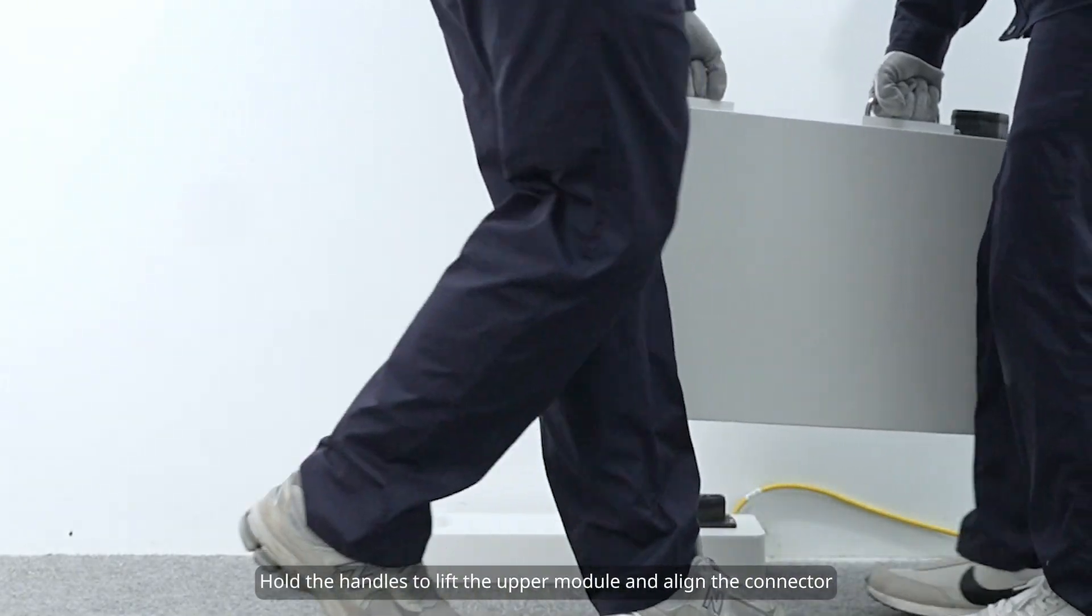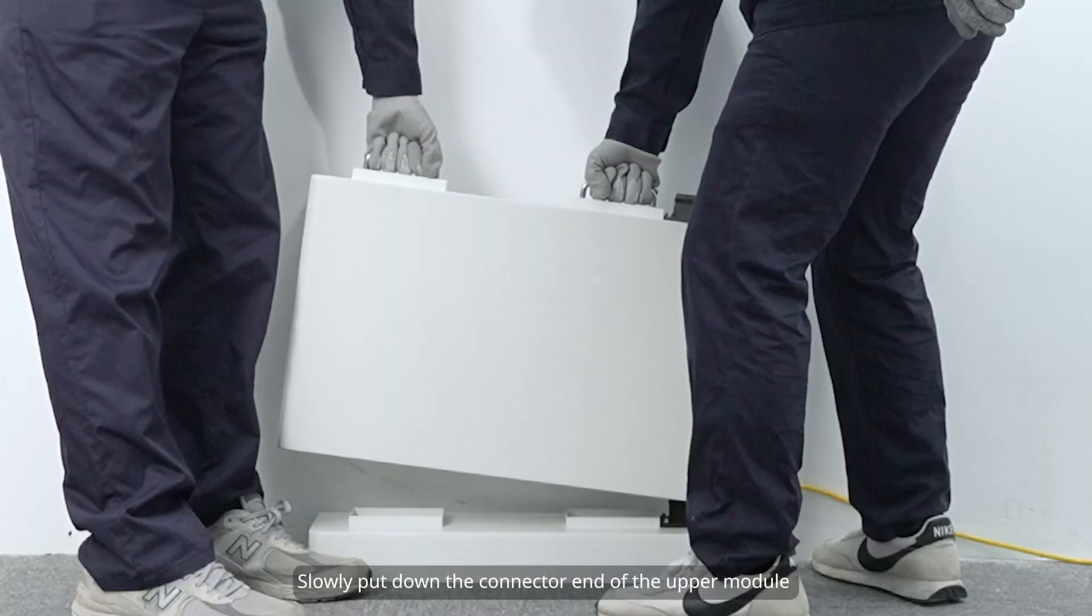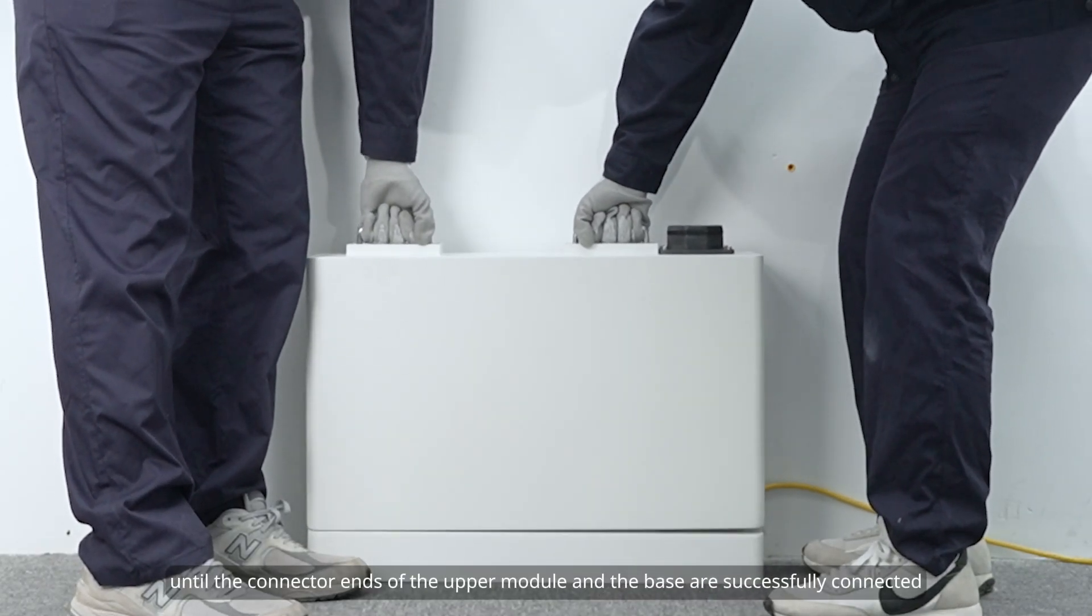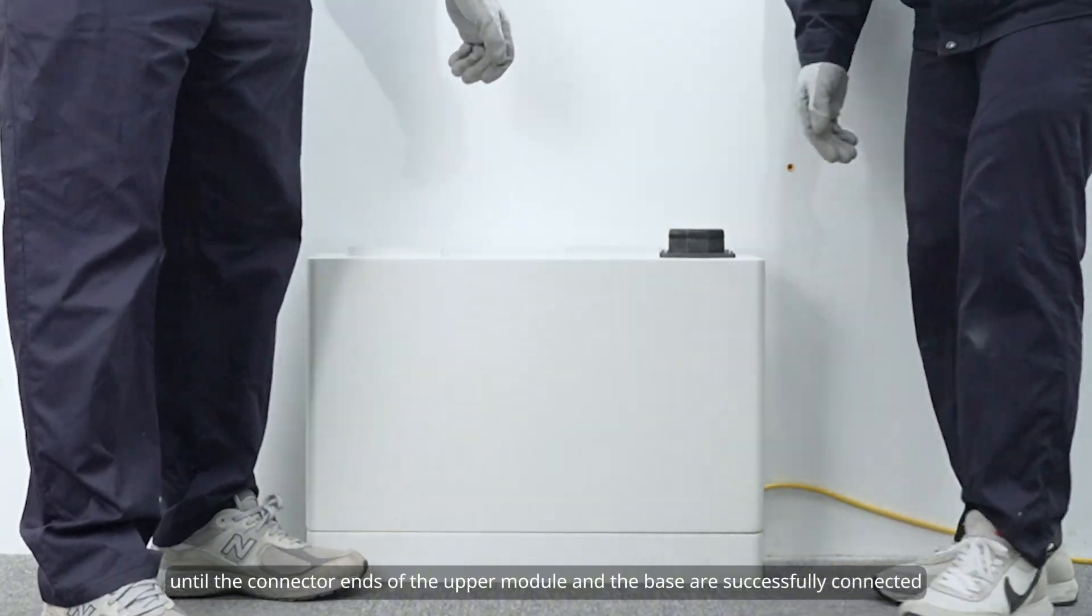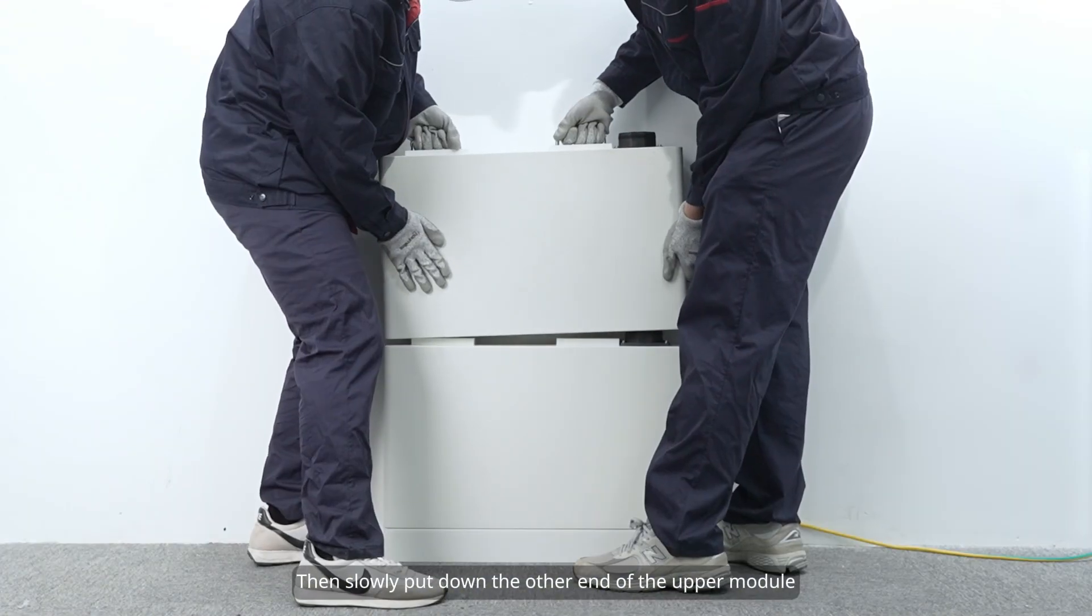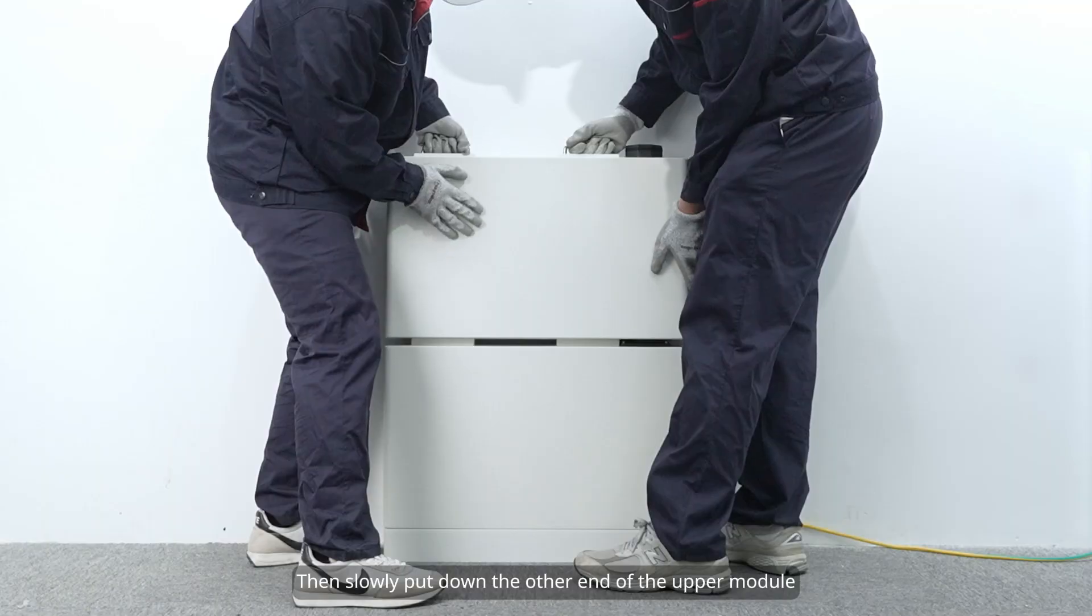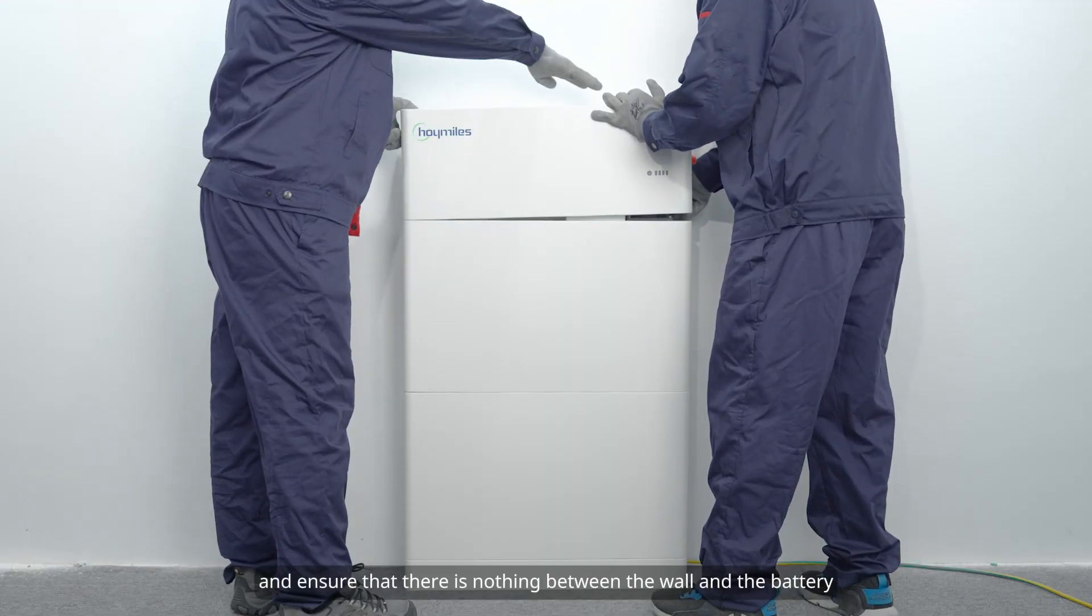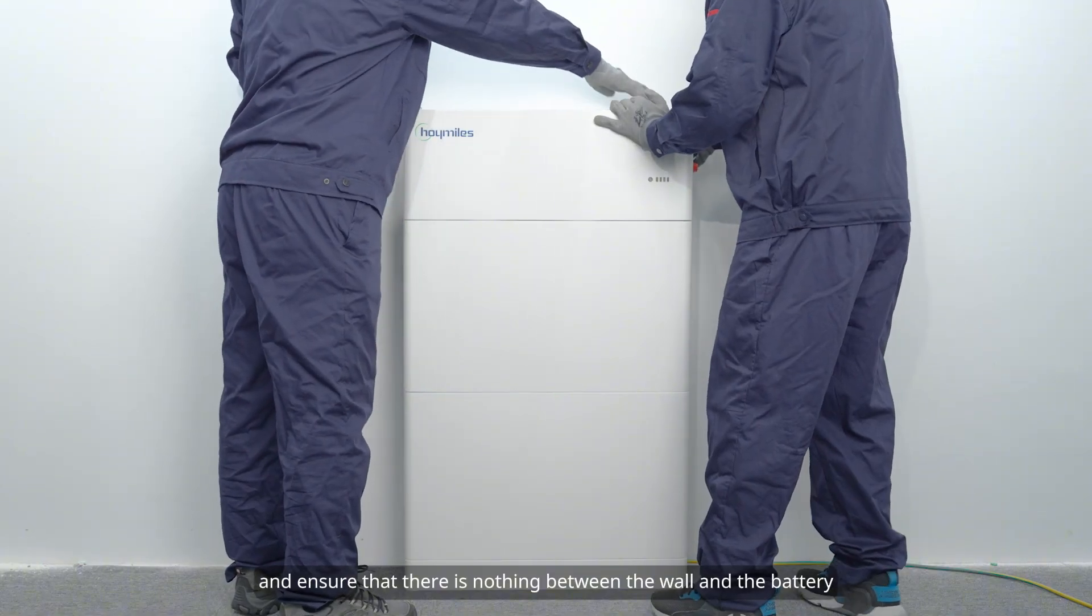Hold the handles to lift the upper module and align the connector. Slowly put down the connector end of the upper module until the connector ends of the upper module and the base are successfully connected. Then slowly put down the other end of the upper module. Stack other modules layer by layer, and ensure that there is nothing between the wall and the battery.